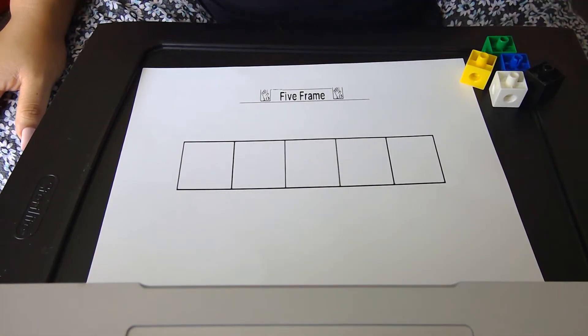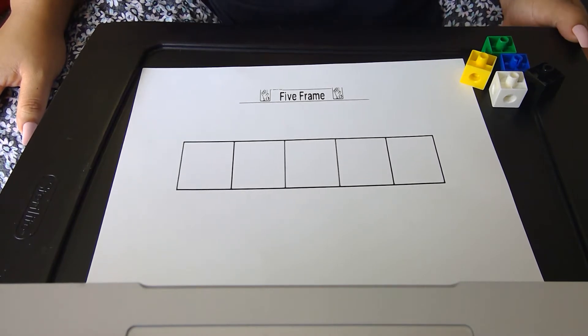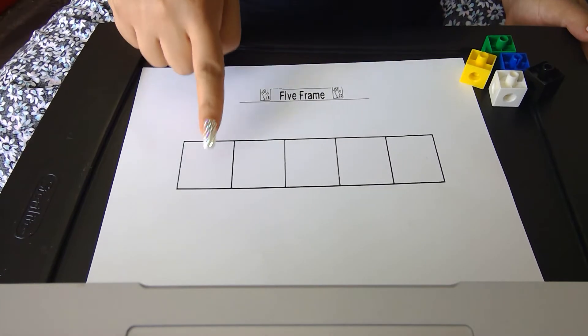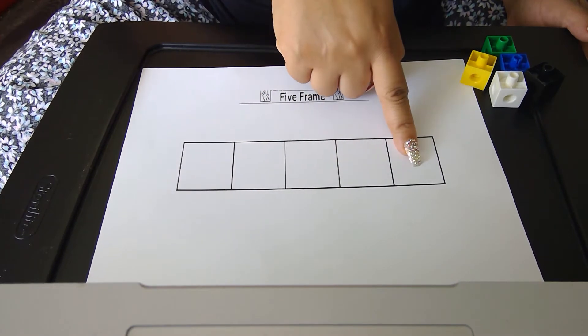Hi students, we're learning about our five frame today. On a five frame there are five boxes: one, two, three, four, five.